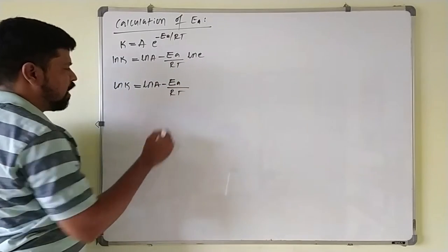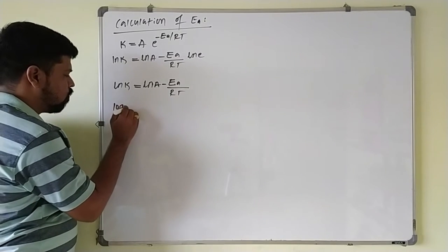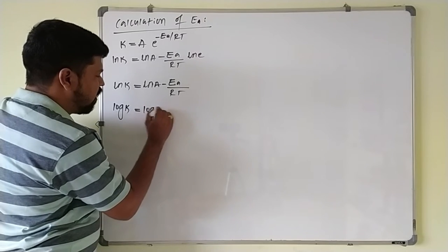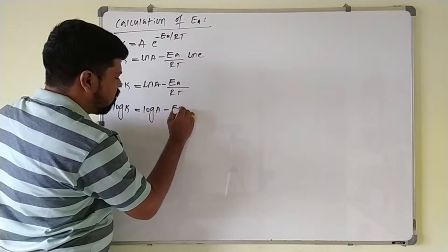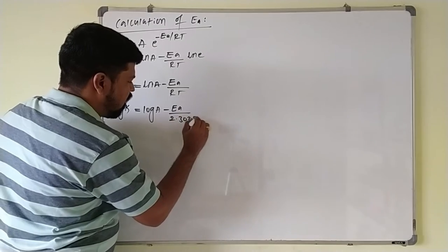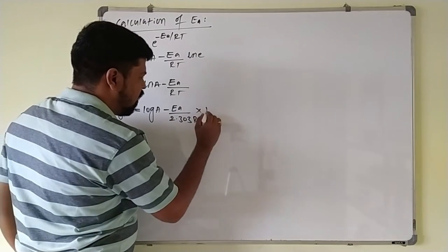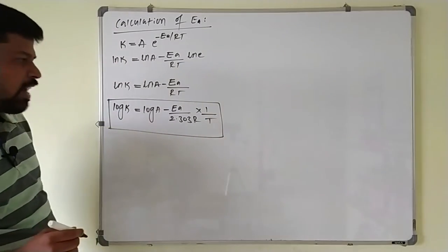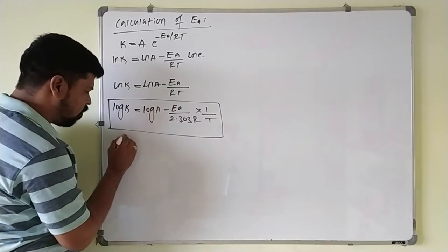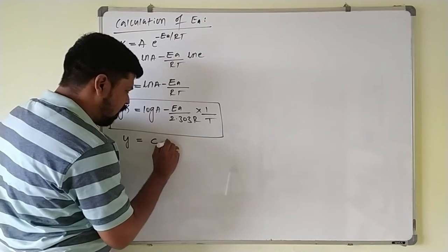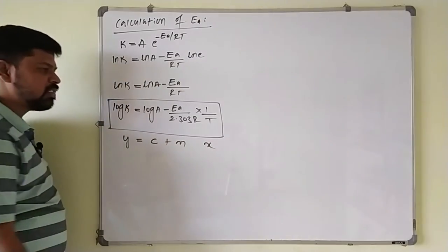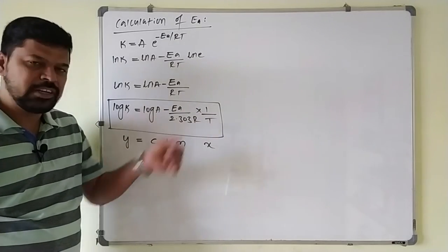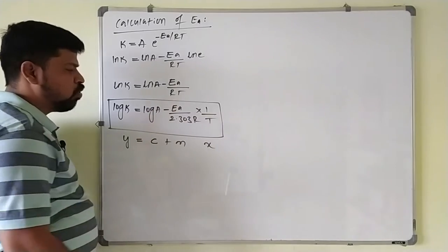Converting to log base 10, we get: log k = log A minus Ea divided by 2.303 RT, which can be written as log k = log A minus (Ea / 2.303R) × (1/T). This is in the form of y = mx + c, where 1/T is along the x-axis and log k is along the y-axis. The slope is negative and equals minus Ea divided by 2.303R.